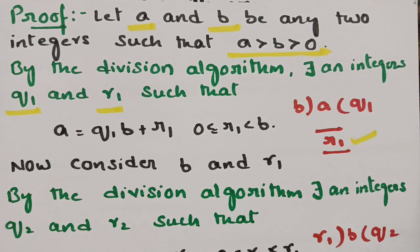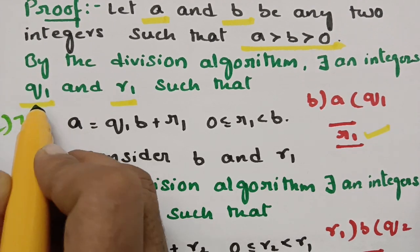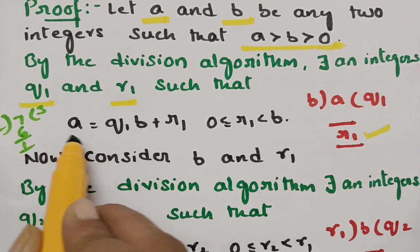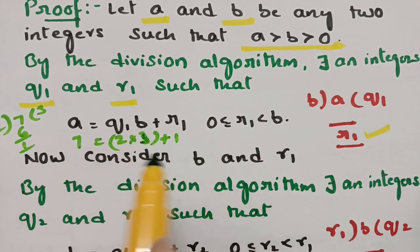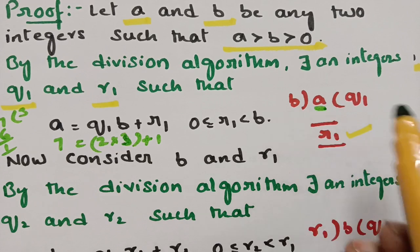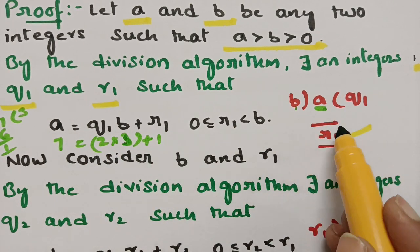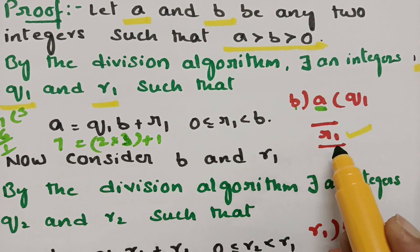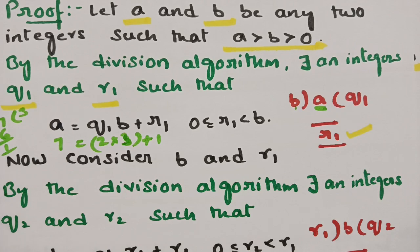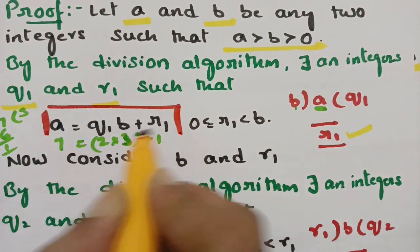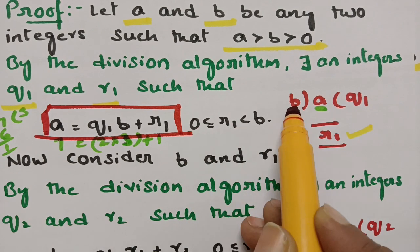For example, if you divide 7 by 2: quotient is 3, remainder is 1, so 7 = 2×3 + 1. Likewise, A = BQ1 + R1, where R1 is either 0 or strictly less than B. Now consider B and R1. By the division algorithm, there exist integers Q2 and R2 such that B = R1·Q2 + R2, where 0 ≤ R2 < R1.